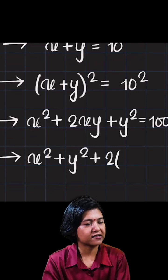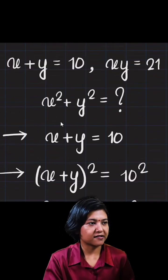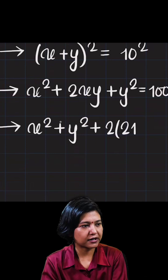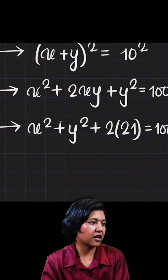So two times what's the value of xy? It's given to us as 21. So we are going to plug it in 2 times 21 and then equals to 100.